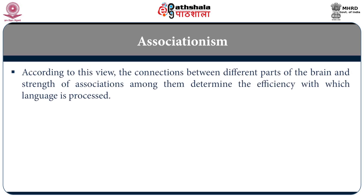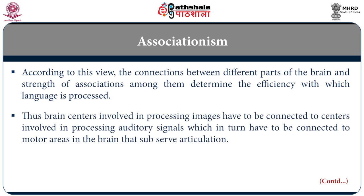According to associationism, connections between different parts of the brain are more important than the areas themselves. It is the strength of the connection that allows us to understand and use language. Brain centers involved in processing images have to be connected to centers involved in processing heard sounds, which in turn have to be connected to the motor area in the frontal lobe, which sends instructions down to our speech muscles. So there have to be connections between the comprehension area, the production area, and the motor area — which sends signals down to the speech muscles. It is these associations which are important, not particular locations.